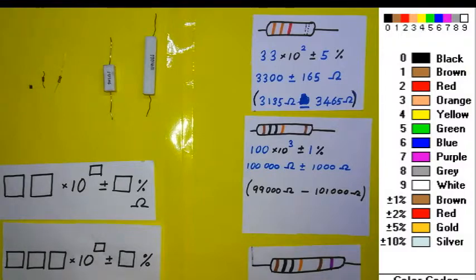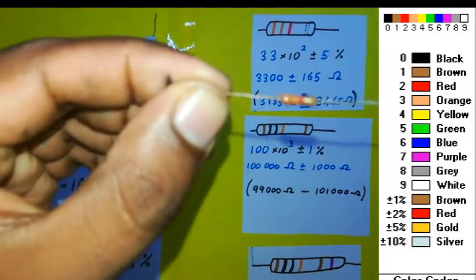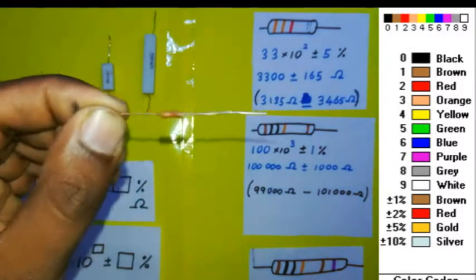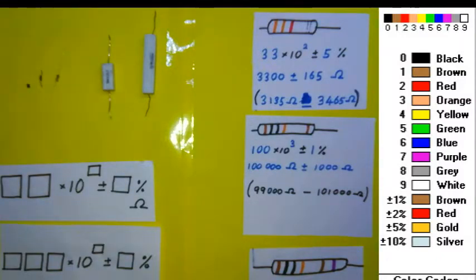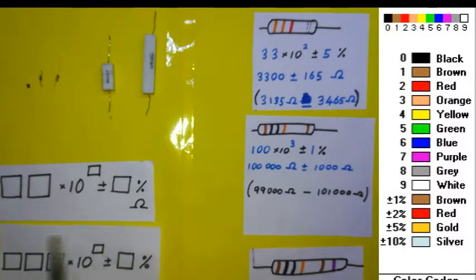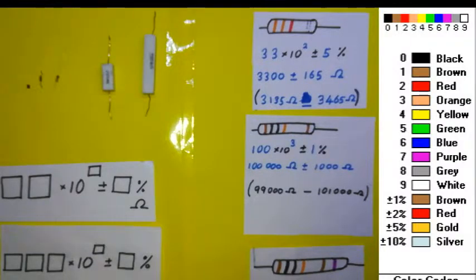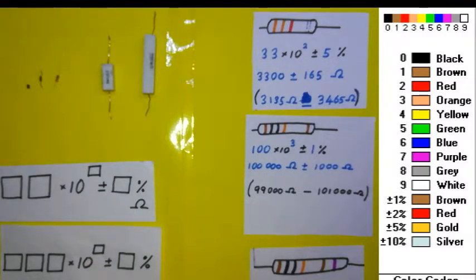The color band is the color band. If you want to use one method in the language, you can use one method in the language. When you use two methods in your language, you can use the same method.